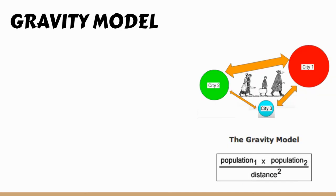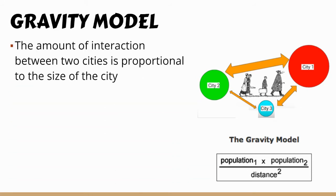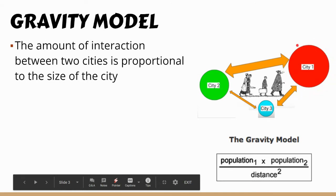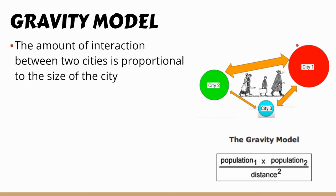You might remember the gravity model — this is not the first time we've talked about it. We talked about it in migration as well. The gravity model states that the amount of interaction between two cities is proportional to the size of the city. This is based off of Newton's model. In the migration unit we talked about how big cities are pull factors, drawing more people because there are more opportunities, in terms of jobs but also services.